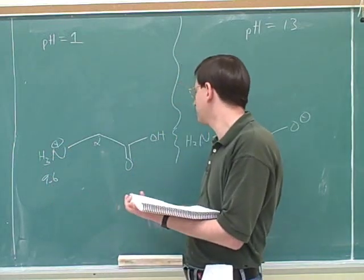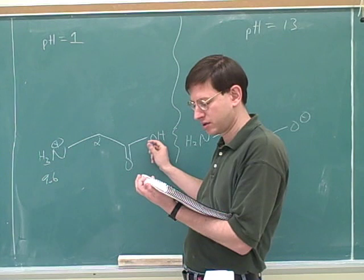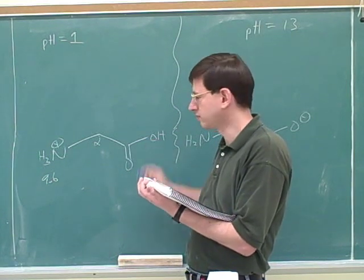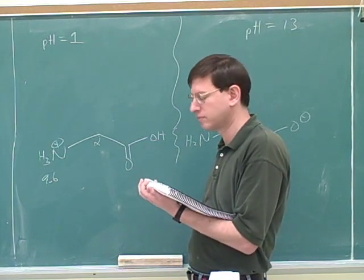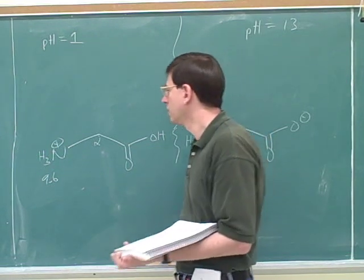And how low does the pH have to be for the carboxy group to be protonated? Lower than 9.6? Because when it's lower, it's more protonated. So once it hits 9.6, that's when it's going to start to be a separate number.